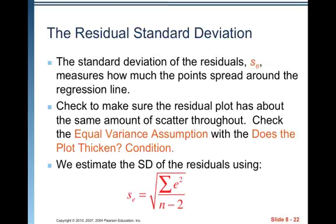The reason we do N minus 2 instead of N minus 1 is because now that we have two variables, we lose two degrees of freedom. So we divide by N minus 2 because there's X and Y.